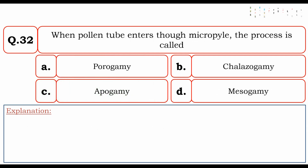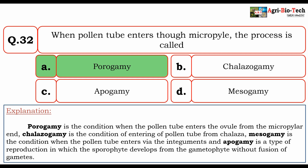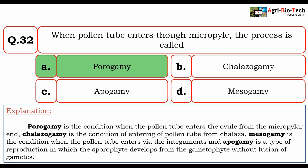Next question: when the pollen tube enters through the micropyle, the process is called — A) porogamy, B) chalazogamy, C) apogamy, and D) mesogamy. The correct answer is A) porogamy. Porogamy is the condition when the pollen tube enters the ovule from the micropylar end. Chalazogamy is when the pollen tube enters from the chalaza. Mesogamy is when the pollen tube enters via the integuments, and apogamy is reproduction where the sporophyte develops from the gametophyte without fusion of gametes. So the correct option is A) porogamy.